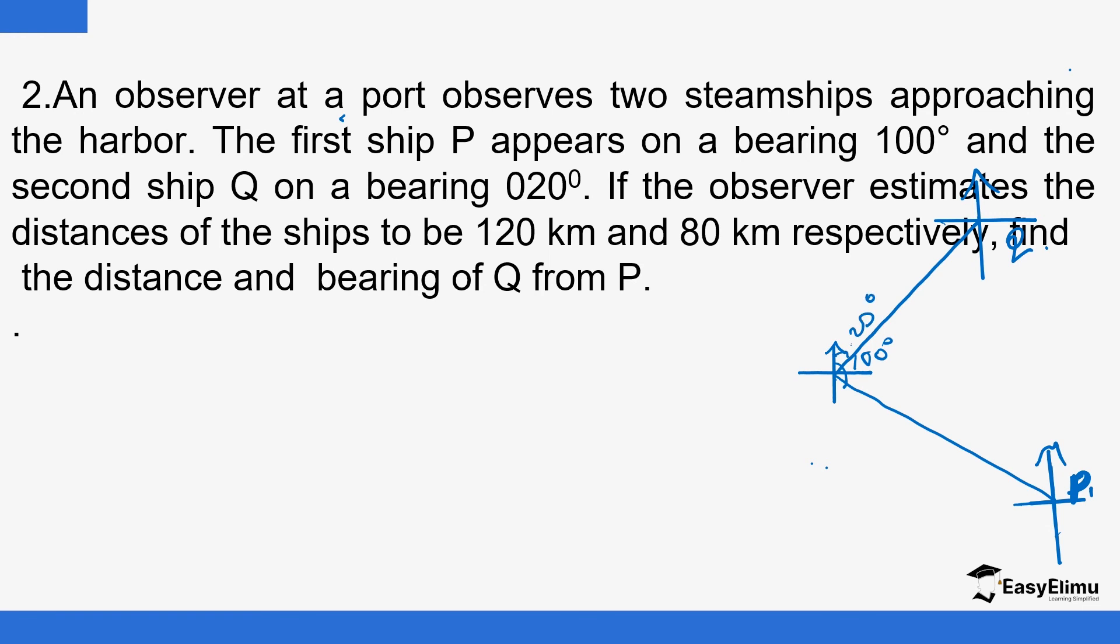Now this bearing here is 20 degrees. So the observer estimates the distances of the ships to be 120 kilometers for the first one, and the second one is 80 kilometers from the harbor. So we are supposed to find the distance and bearing of Q from P, so it means you have to draw it to scale.